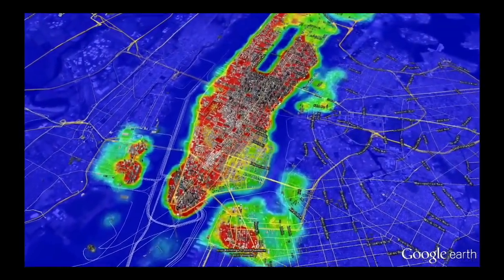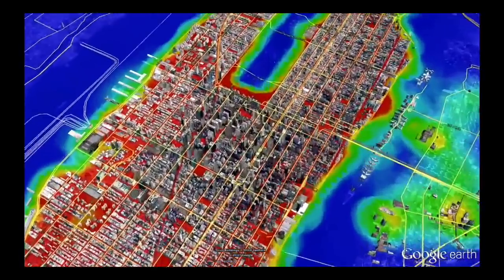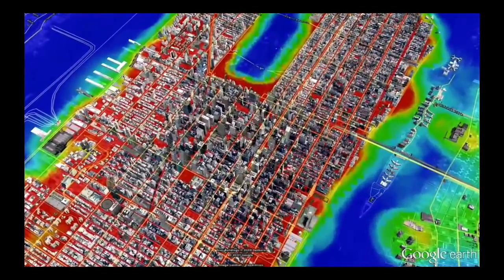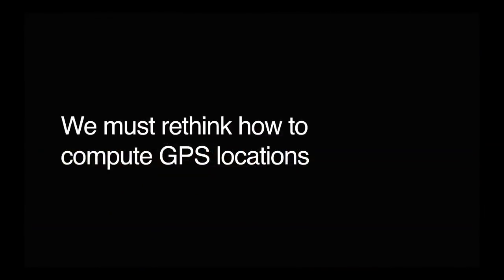This is obviously a big problem for Uber because a lot of our business is in high-rise urban areas. So here I plotted a building height heat map, and that's red is tall buildings, blue is not tall buildings. And basically unless you're in Central Park, if you're on Manhattan, you're going to have these kinds of problems. So we have to solve this. We really have to think again about how it is that we compute GPS location fixes.